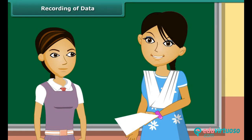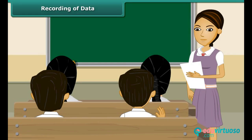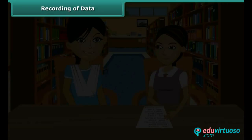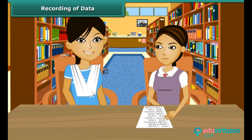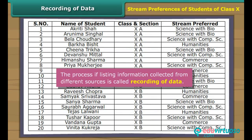Recording of Data: Mrs. Sandeep is the academic in charge. She has assigned Sheetal the task of writing the stream preference of all class 10 students. Sheetal collects all requisite details, summarises them in a single sheet, places it in a file and hands the file over to the academic in charge. The process of listing information collected from different sources is called Recording of Data.